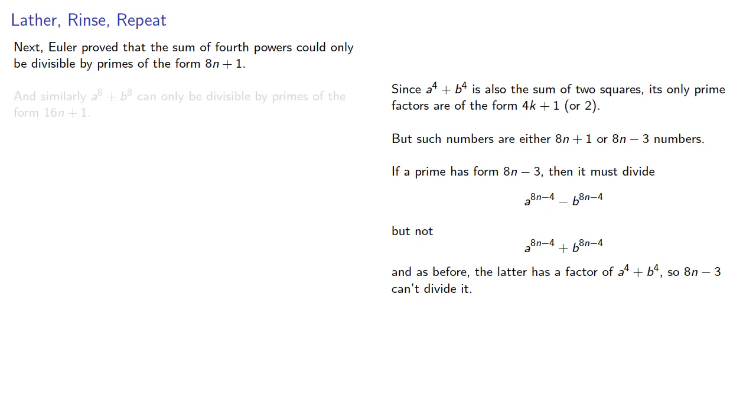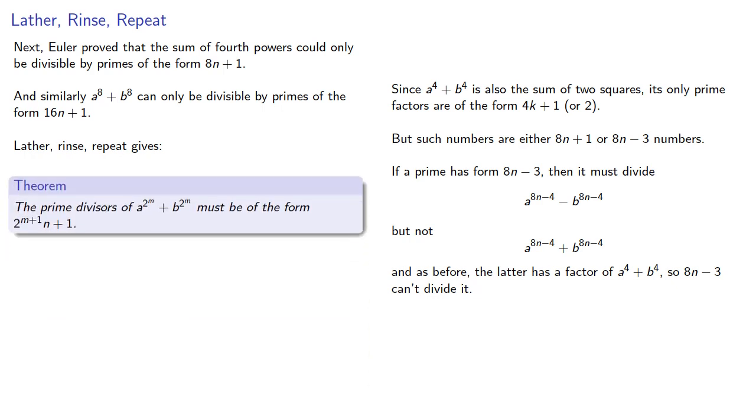And similarly, a to the eighth plus b to the eighth can only be divisible by primes of the form 16n plus 1, and lather, rinse, repeat to give us a main result. The prime divisors must be of this form.